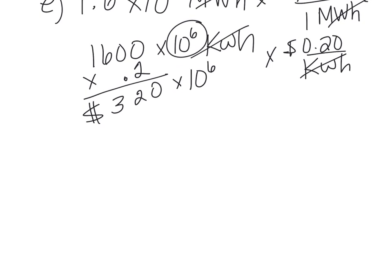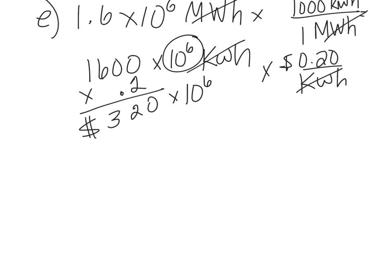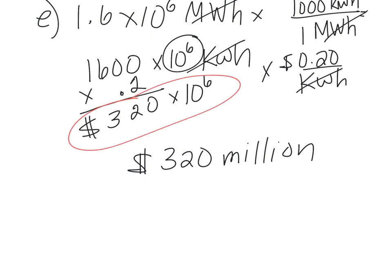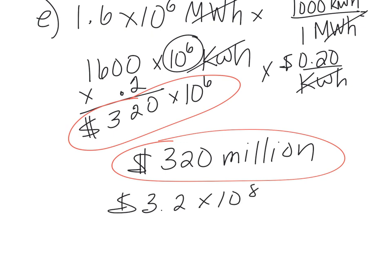This is bad scientific notation, so I can change this to 320 million. On the AP test you could leave it at this, or you could leave it like this, or you could change it to proper scientific notation: 3.2 times 10 to the 8th. Don't forget your dollar sign, you have to put your units in. Any of those answers on an FRQ would be acceptable.